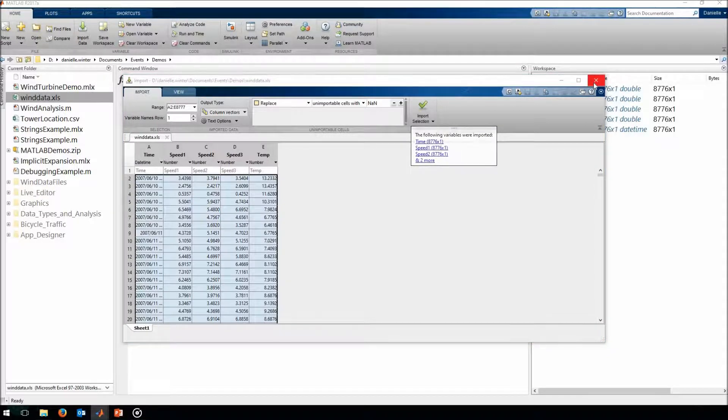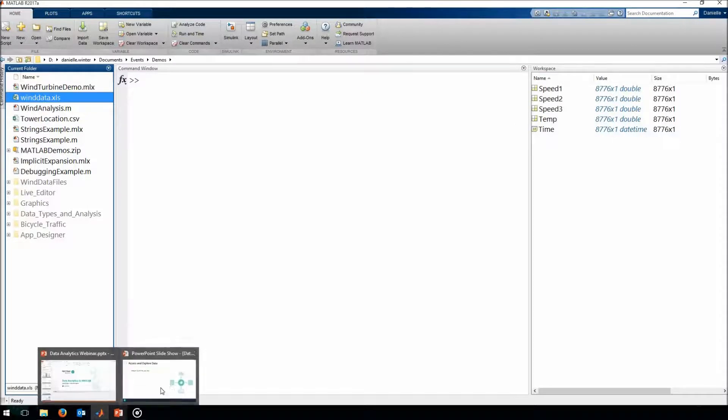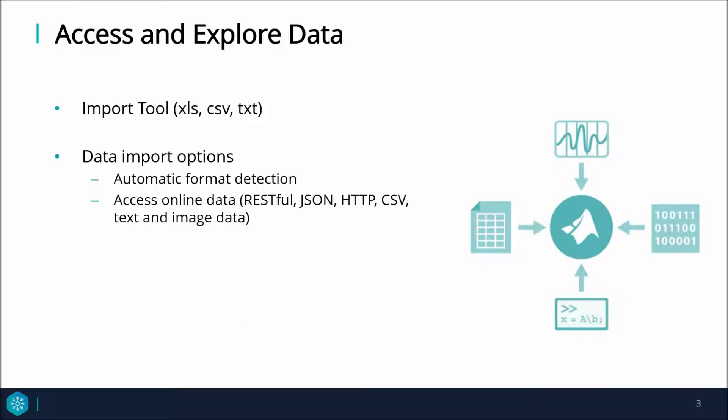MATLAB has automatic format detection for different types of data, files containing multiple data types. So over here we have a file which contains date-time data and numerical data, and MATLAB has automatically picked up what type each column is. You can use data import options to customize your import and set up your data for your workflow. You can also pull in data from the web using WebRead or setting up a TCP client.